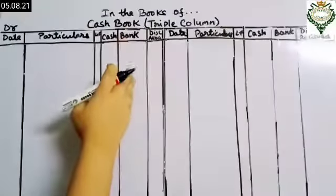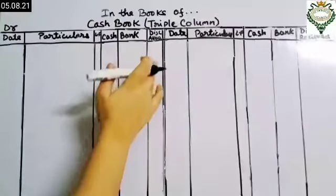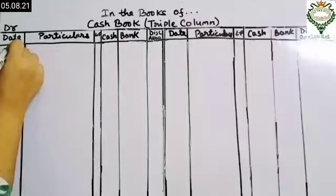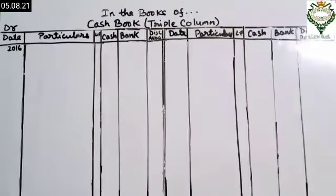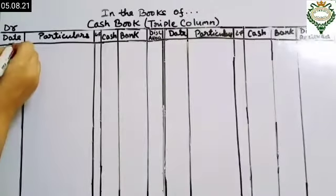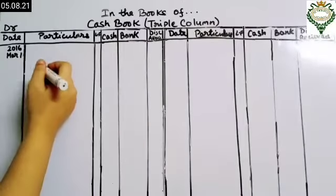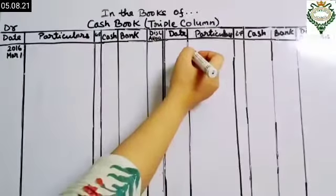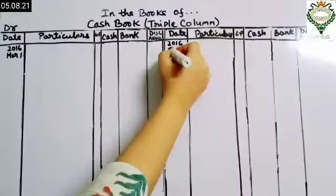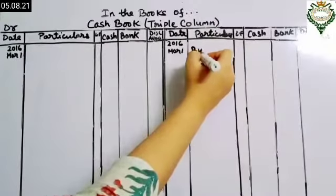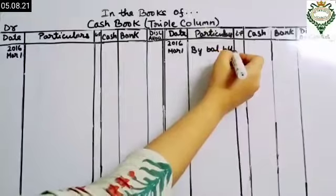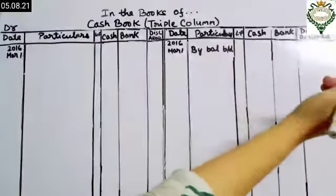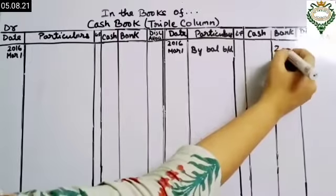This is the format for the triple column cashbook — the three columns are cash, bank, and discount. Coming to the question: the first transaction on 1st March 2016 is an overdraft balance at bank, meaning the company has a loan. So we record it on the credit side, writing 'By Balance b/d' with ₹2000 in the bank column, since it is an overdraft.